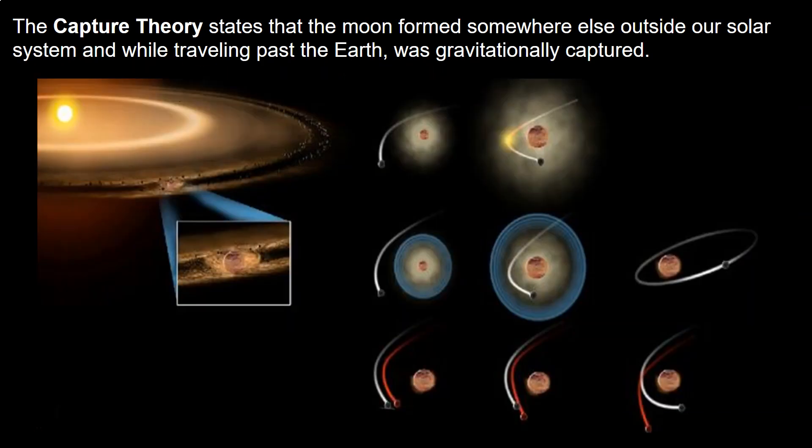The next theory is the capture theory. This theory states that the moon formed somewhere else outside our solar system and, while traveling past Earth, was gravitationally captured and kept in orbit.